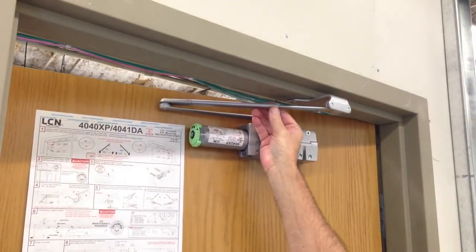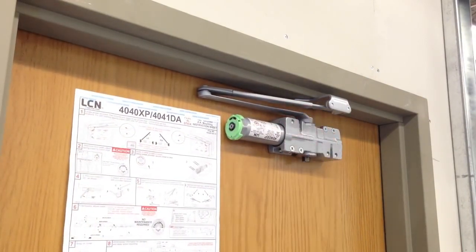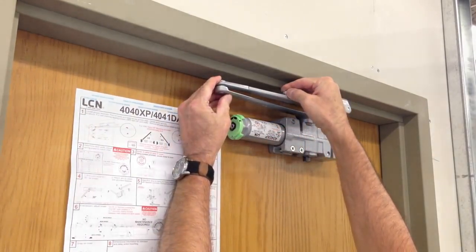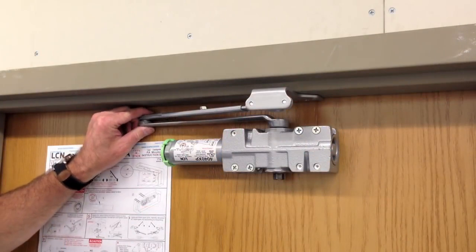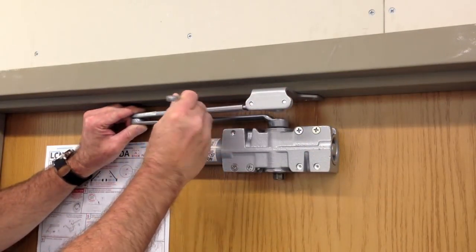Slide the arm tube over the rod and thread the arm screw through the tube and into the rod. Do not tighten. Position the main arm until it is parallel to the face of the door. Then tighten the arm screw.